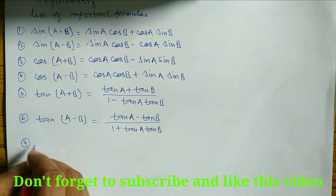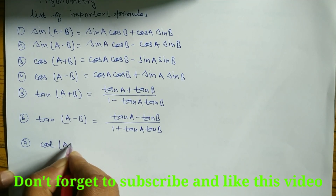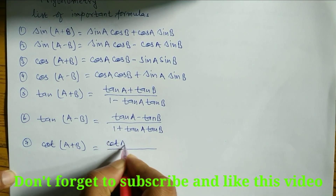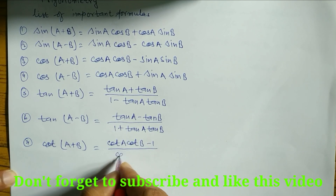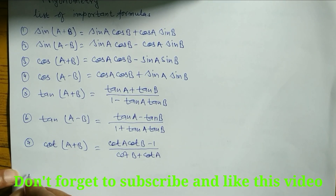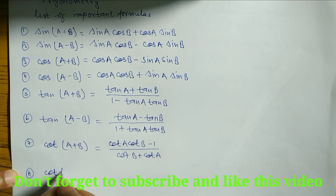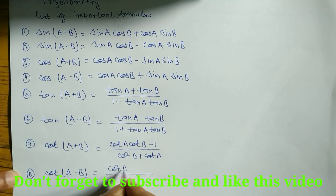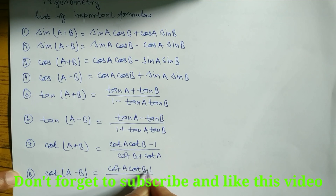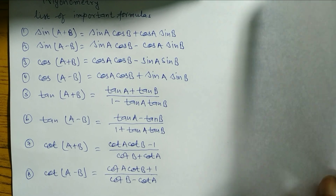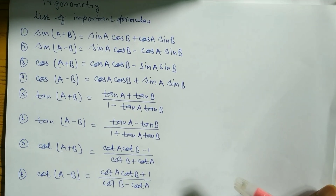Formula number 7: cot(A+B) is equal to (cot A cot B − 1) / (cot B + cot A). Formula number 8: cot(A−B) is equal to (cot A cot B + 1) / (cot B − cot A).